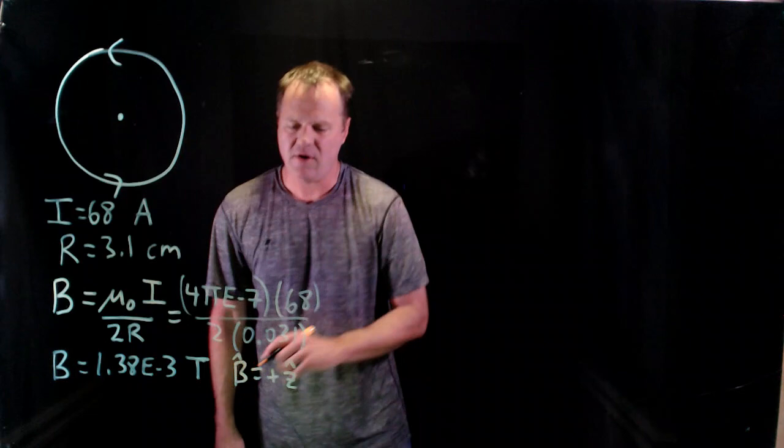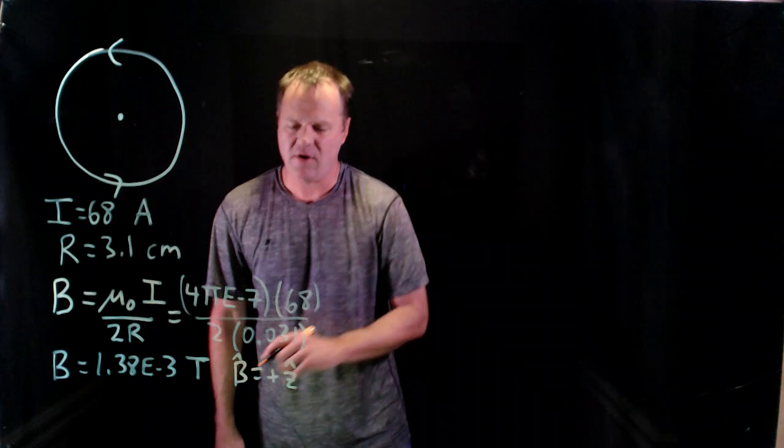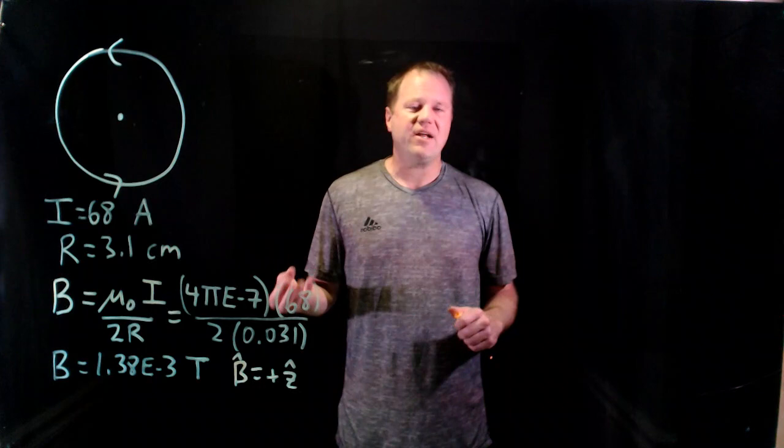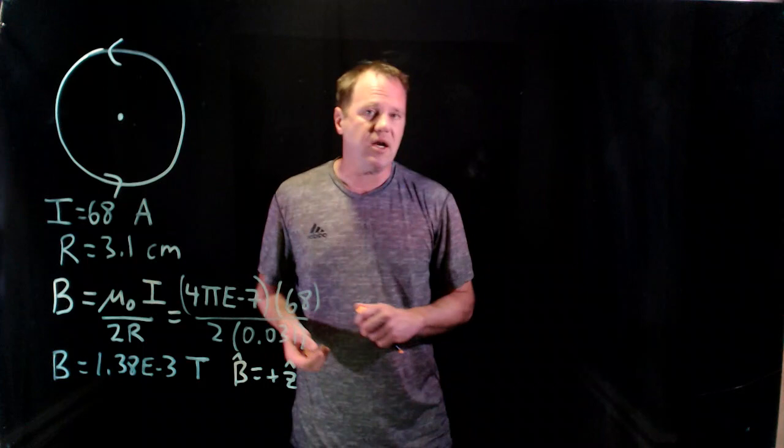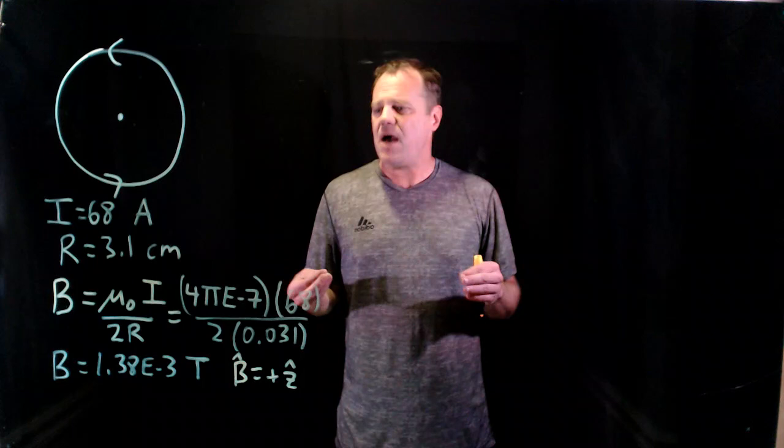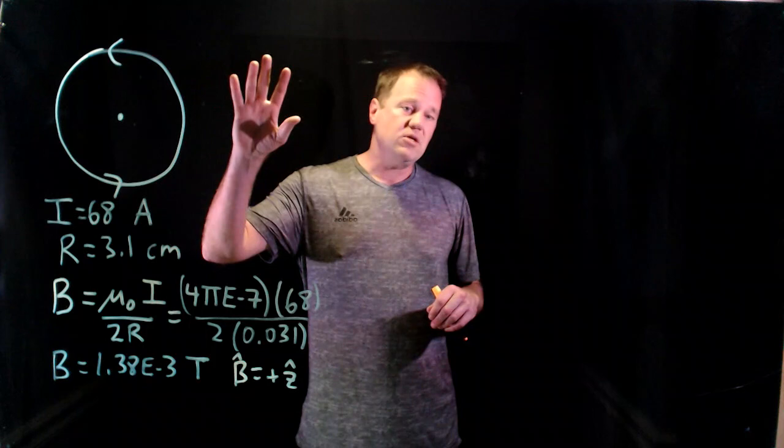The direction would be in the plus z direction or coming out of the page. So we'll write that down. Plus z. So we've got the magnetic field at this location. But in terms of testable predictions, this is not terribly interesting. Maybe we could put a magnetic field detector in there, some sort of device that measures magnetic fields and check if that number holds true. But what about seeing something happen? Well, let's say we take a proton.